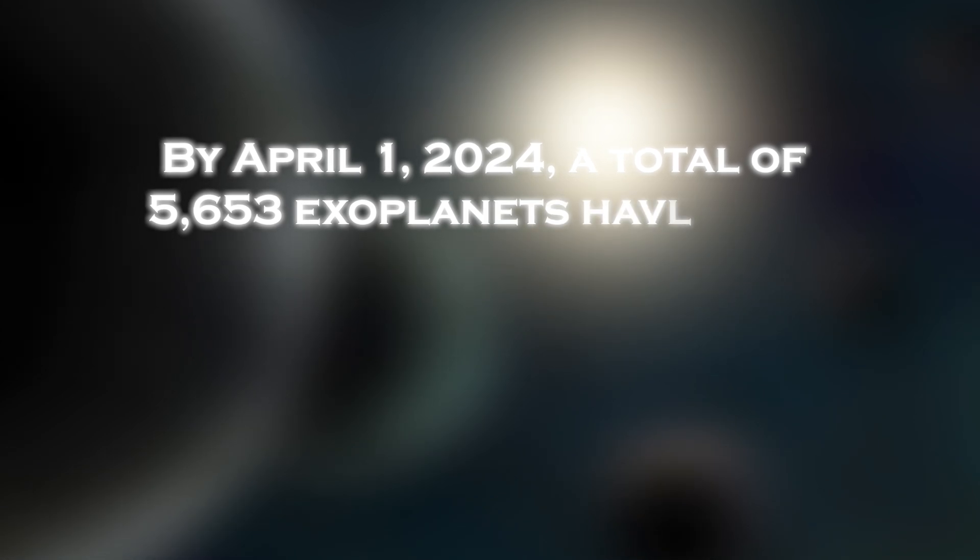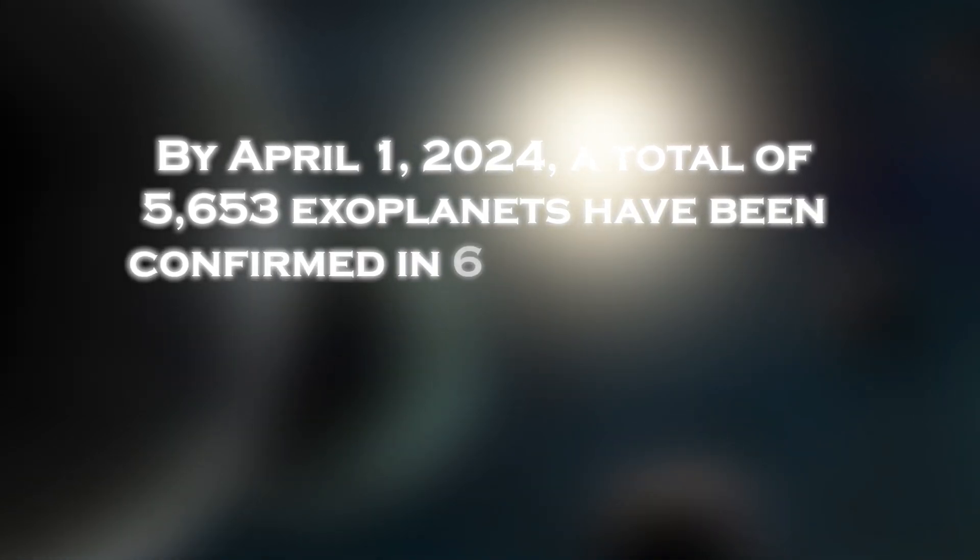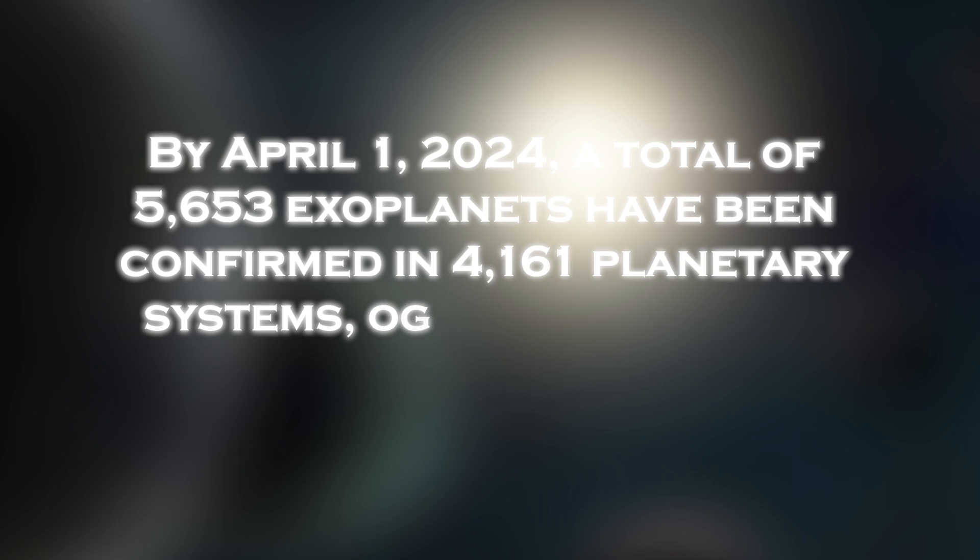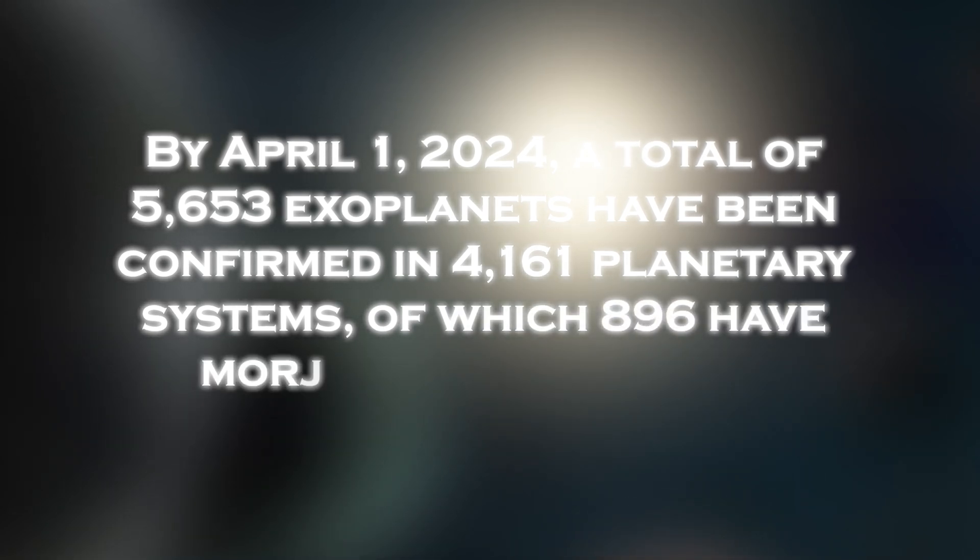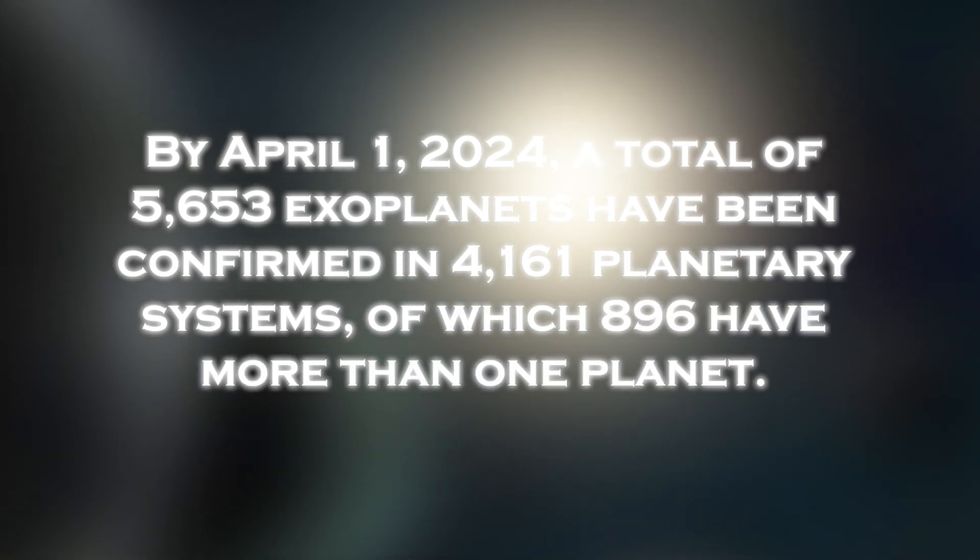By April 1, 2024, a total of 5,653 exoplanets have been confirmed in 4,161 planetary systems, of which 196 have been more than one planet.